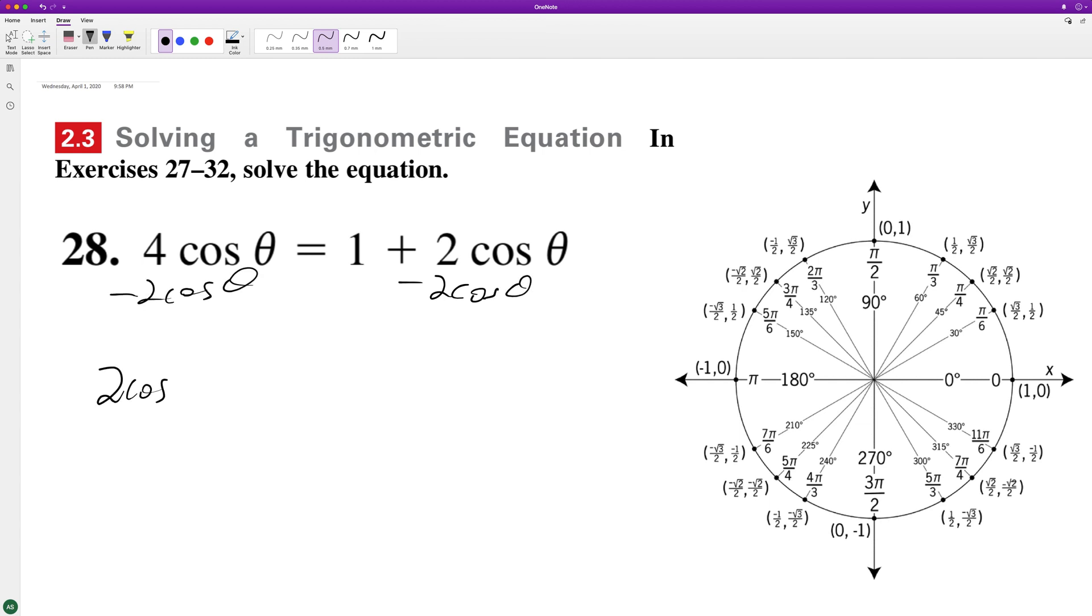So we get two cosine theta is equal to one, divide through by two. So we have cosine of theta is equal to one half.